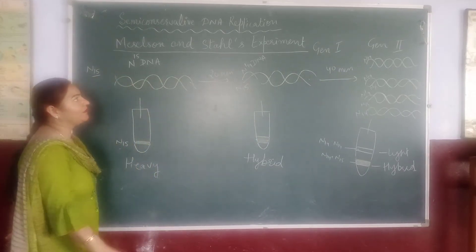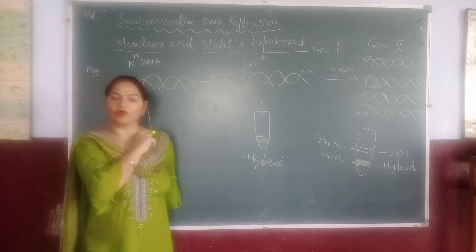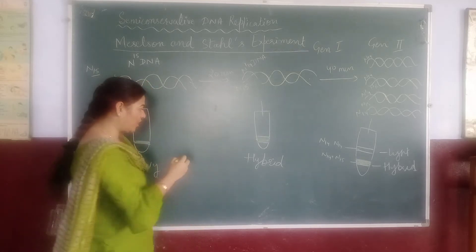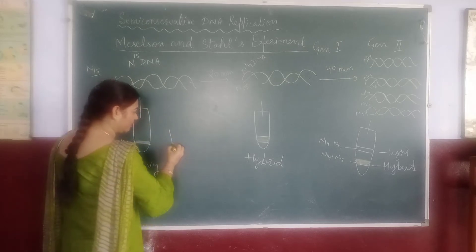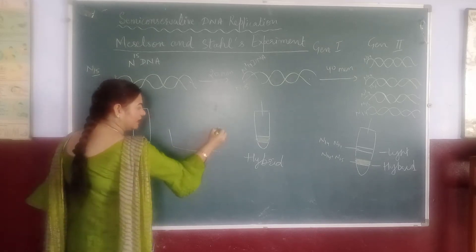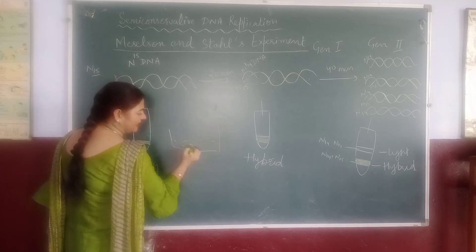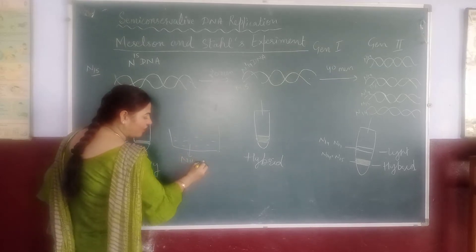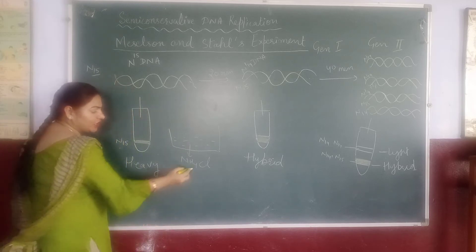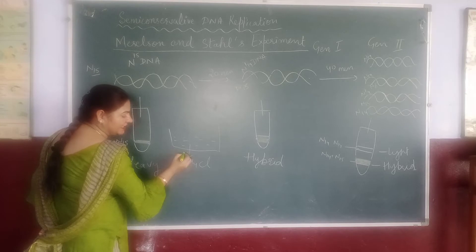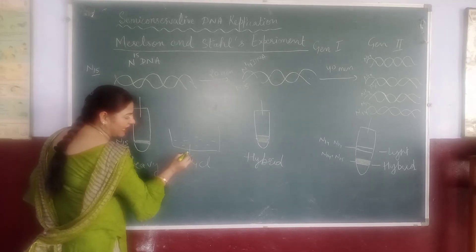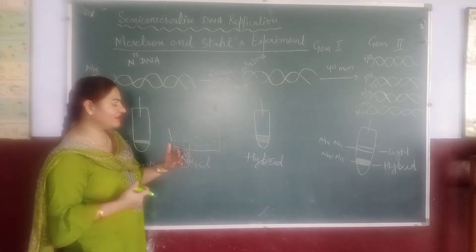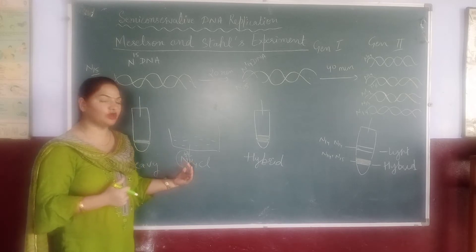In 1958, what was shown in an experiment? E. coli bacteria were grown in a culture medium — a nutrient medium. That medium was NH4Cl, ammonium chloride. Ammonium chloride has nitrogen. This is the N15 type — N15 means heavy nitrogen. It is an isotope of nitrogen.